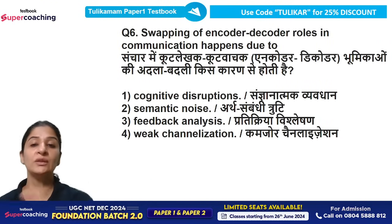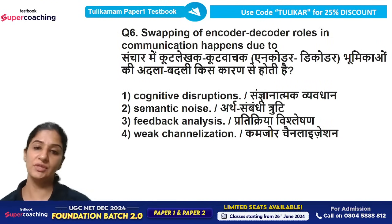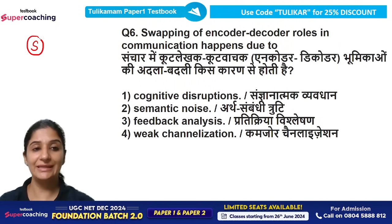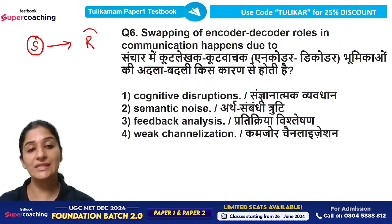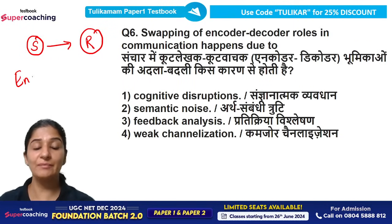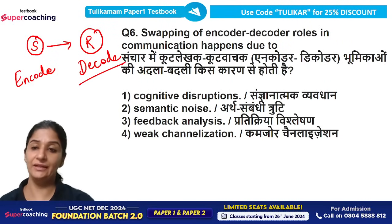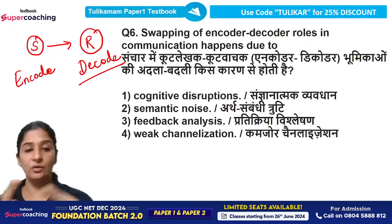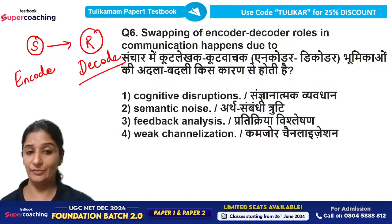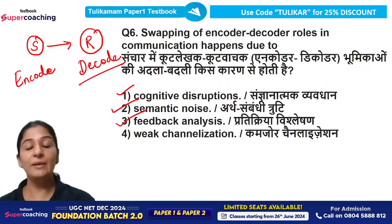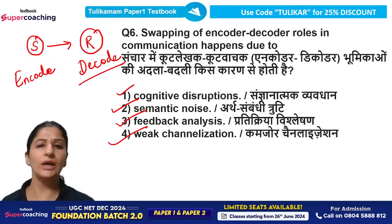Question 6: Swapping of encoder and decoder roles in communication happens due to what? As we know, the sender encodes the message and sends it to the receiver who decodes it. The sender can become a receiver and the receiver can become a sender — this swapping of encoder-decoder roles can happen in communication. Is it due to cognitive disruption, semantic noise, feedback analysis, or weak channelization?